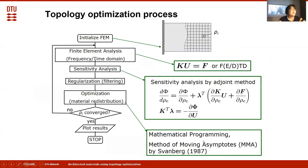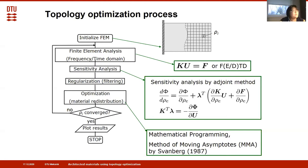To summarize, the topology optimization procedure can be described by this flowchart. For a design domain, we first discretize it. For each element, using the finite element method, we introduce a design variable to represent the material occupation at that element. Based on the material occupation, we perform finite element analysis and sensitivity analysis to get the structural response and evaluate the performance in terms of a figure of merit—for example, compliance or stress. We can also formulate constraints.